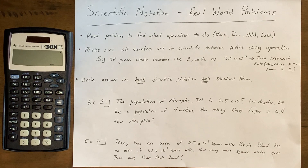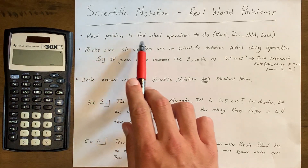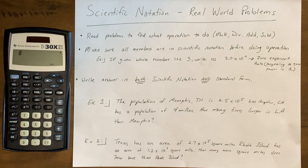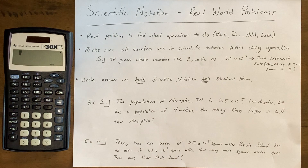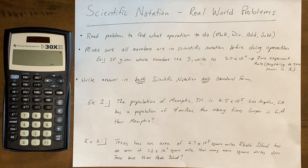Just a couple things before we look at two examples. The first thing: we want to read each problem to find what operation to do. Those operations are going to be multiply, divide, add, or subtract. There are a couple instances where we might see a word that is a little tricky. We also want to make sure all numbers are in scientific notation before doing an operation — both numbers have to be a base number times 10 to a certain power.